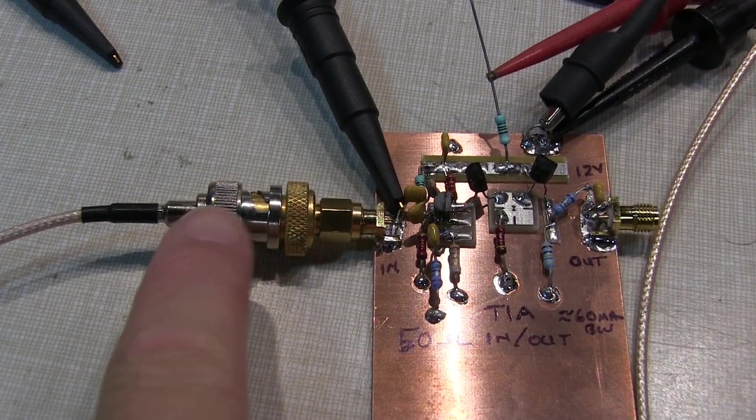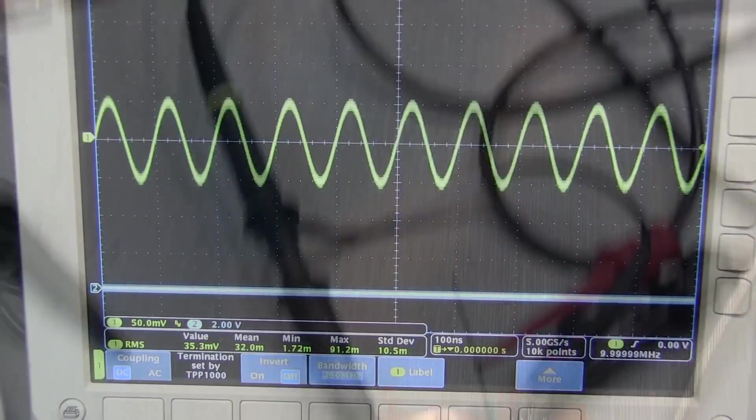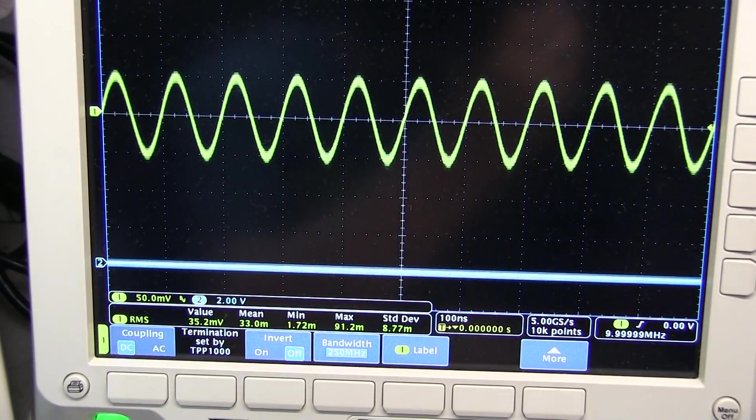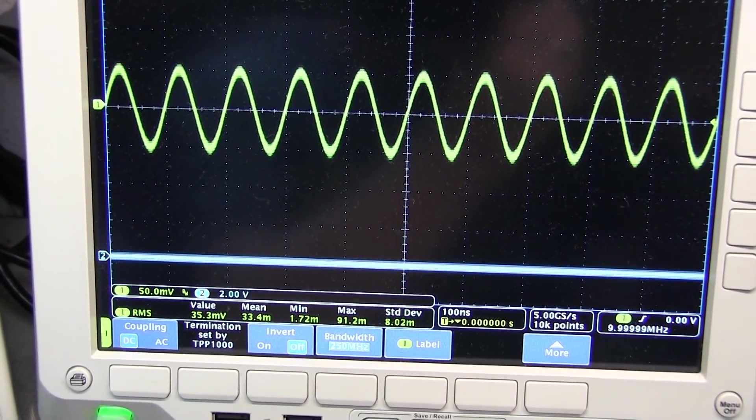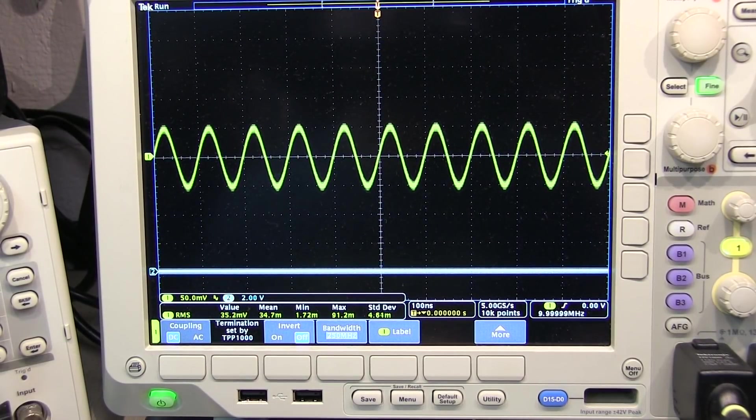So now I've got that same signal hooked into the input of the amplifier and I'm probing right at the input connector. And if we look at the scope, we can see we're seeing 100 millivolts peak-to-peak, just like we did when we were connected directly. So that tells me that indeed the input impedance is, as mathematically predicted, 50 ohms. But the VNA is not showing that. So what's going on?